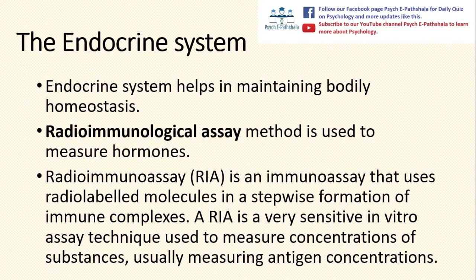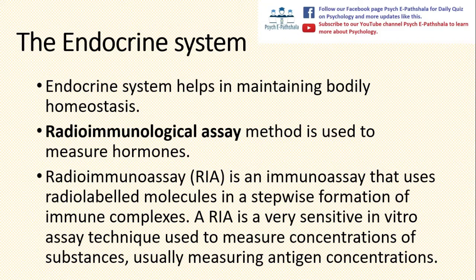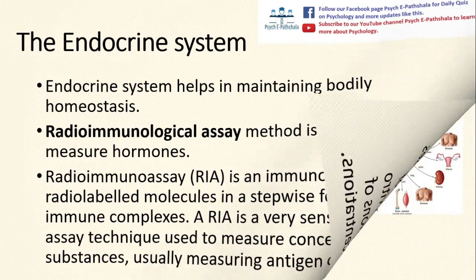In this method, a blood sample is drawn from an individual and in laboratory settings, the blood sample is labeled with radioactive isotopes that attach to itself in the hormone complexes. In the stepwise formation of immune complexes, the level of hormone present in that blood is assessed.